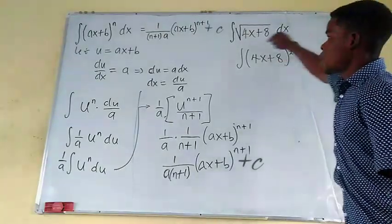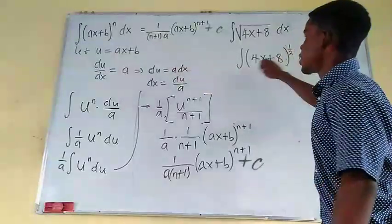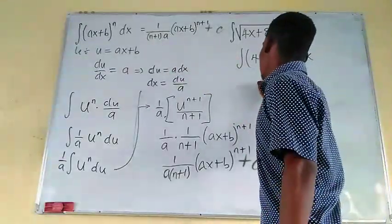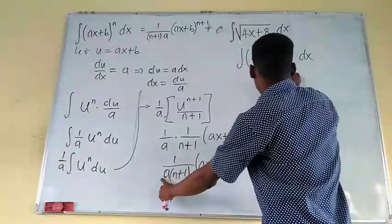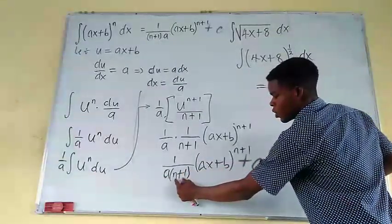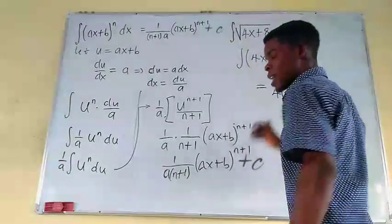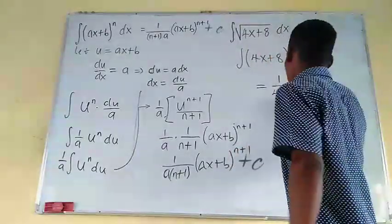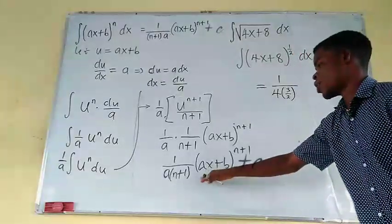This is the same thing, where 1 over 2 takes the place of N, and 4 takes the place of A, and 8 takes the place of B. So the anti-derivative is just going to become, remember, 4 takes the place of A. So we just have 1 over 4 times N plus 1. What was our N plus 1? Our N alone is 1 over 2. So we add 1 to that. We're going to have 3 over 2. So we have here to be 3 over 2, like that.